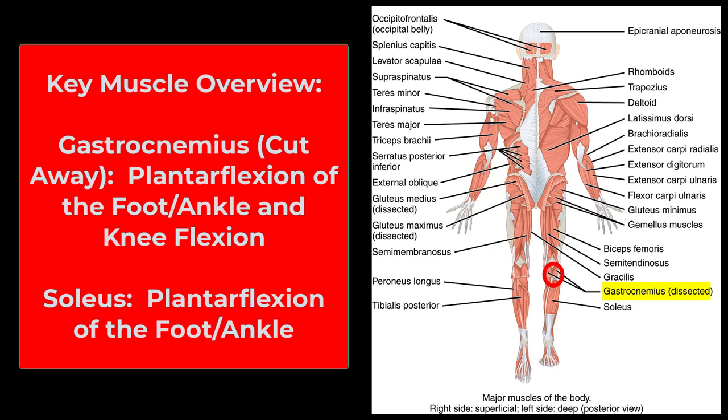Down in the calf, we have the gastrocnemius and soleus. The gastrocnemius has two large bellies — medial and lateral — and is involved in plantar flexion, standing on your tiptoes. The soleus is deep to it, also involved in plantar flexion. The key difference: the soleus is a postural muscle that works during prolonged standing, while the gastrocnemius is a more explosive, phasic muscle used in running or climbing stairs.